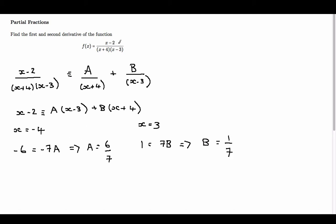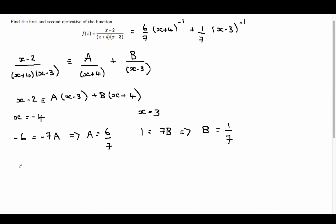We can write the expression (x minus 2) over (x plus 4)(x minus 3) as (6 over 7)(x plus 4) to the minus 1, plus (1 over 7)(x minus 3) to the minus 1. Writing it with the minus 1 power instead of the fraction form makes it a little bit easier to differentiate. To calculate f prime of x, we just need to differentiate (x plus 4) to the minus 1 and (x minus 3) to the minus 1.